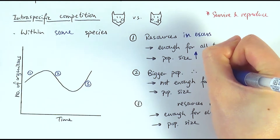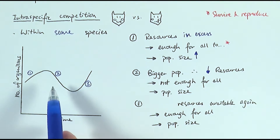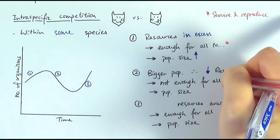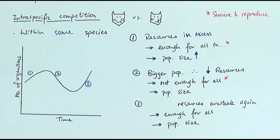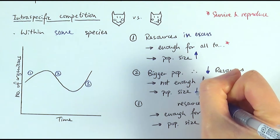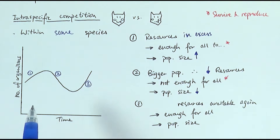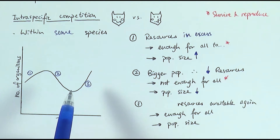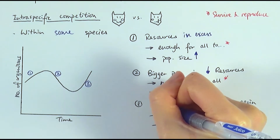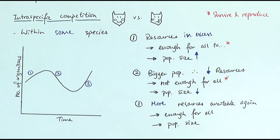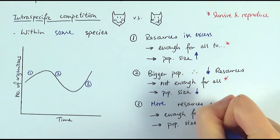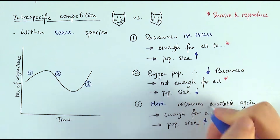However, as the population grows, the amount of resource decreases because there are more individuals competing for the same food and space. There's no longer enough for all to survive and reproduce, so there is more intraspecific competition and the population size decreases. After a while, because there are fewer individuals competing, resources become more available again — enough for all to survive and reproduce — so competition decreases and the population increases once more.